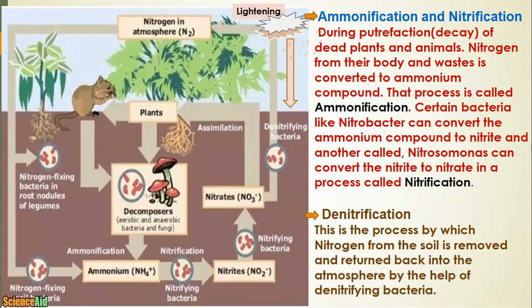Denitrification: this is the process by which nitrogen from the soil is removed and returned back into the atmosphere by the help of denitrifying bacteria. In the image showing the nitrogen circle, we have nitrogen-fixing bacteria in root nodules of legumes, ammonium compounds, the nitrification process, and denitrifying bacteria removing nitrogen from the soil into the atmosphere. Lightning is also another process that can add nitrogen into the soil. Take your time and study this image.